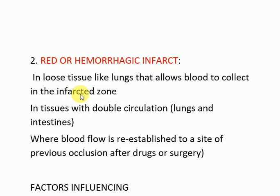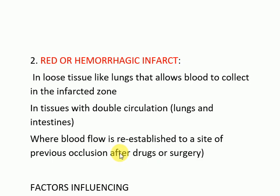Red or hemorrhagic infarcts occur in loose tissues like the lung, which allow blood to collect in the infarct zone. They also occur in tissues with double circulation, like the lungs and intestine, which have collateral circulation. Additionally, red infarcts occur in areas where blood flow is re-established to a site of previous occlusion after drugs or surgery.